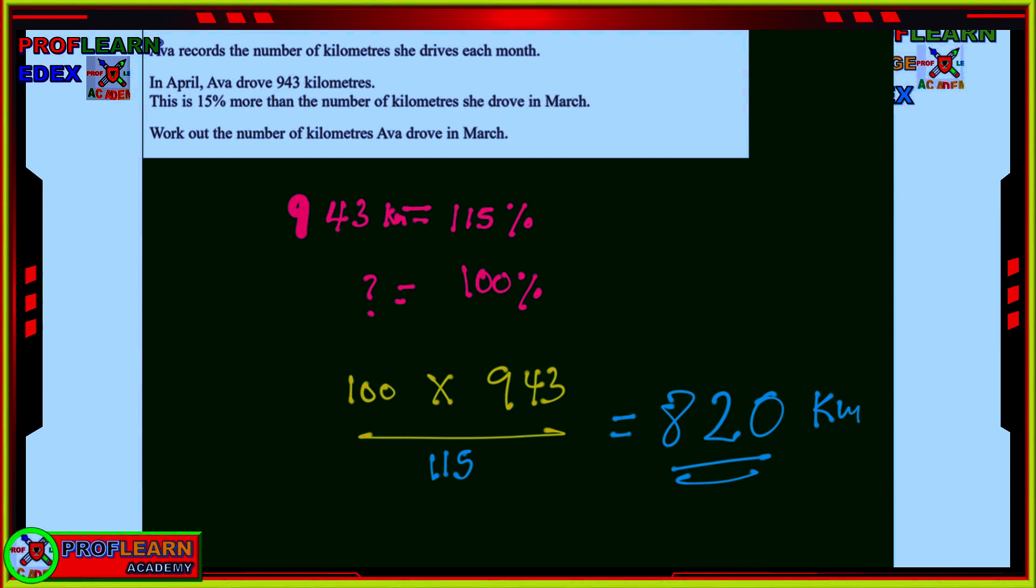We are moving to the next part here, whereby we are told Eva records the number of kilometers she drives each month. In April, Eva drove 943 kilometers. And this 943 kilometers is just 15% more than the number of kilometers she drove in March. So, we can say 943 kilometers equals 115%, because we are told 15% more than. So, we assume that in March it was 100%. If it's 15% more than, then we say 943 equals 115%. Now, we ask ourselves, what about 100% so that we can get the kilometers that were driven in the month of March. And if you work it out, you are going to get nothing other than 820 kilometers.